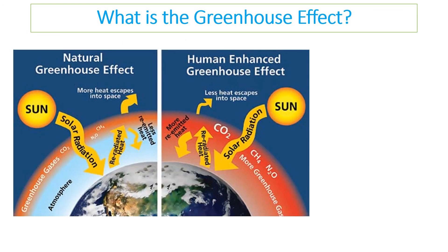There is a natural greenhouse effect which is needed to insulate the planet, and the carbon cycle would have maintained this without human interference. However, we have enhanced it through burning fossil fuels, keeping large numbers of cattle that release methane, and chopping down rainforests. These actions have emitted more greenhouse gases into the atmosphere. The same amount of solar radiation comes in, but less infrared radiation is allowed to escape to space, making the greenhouse effect worse and leading to climate change.